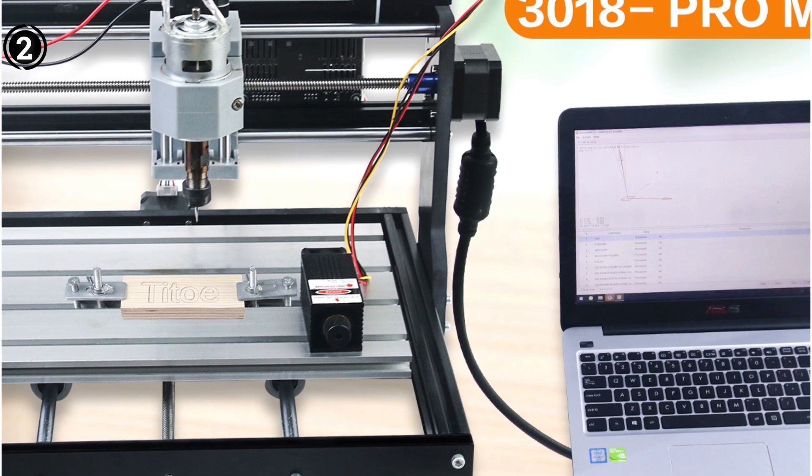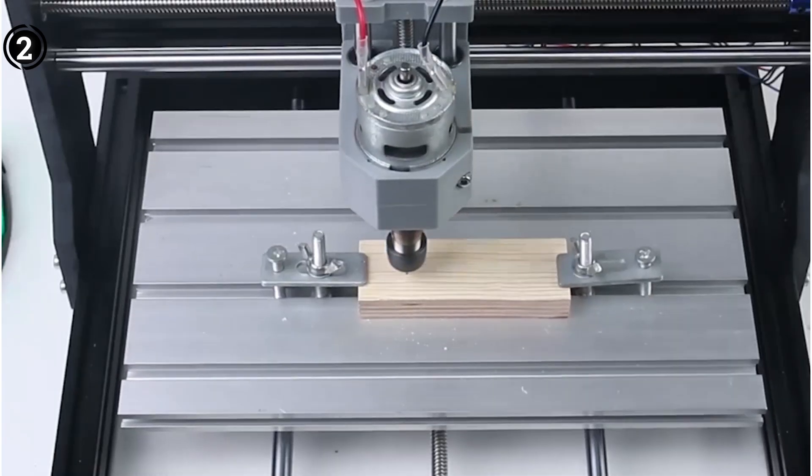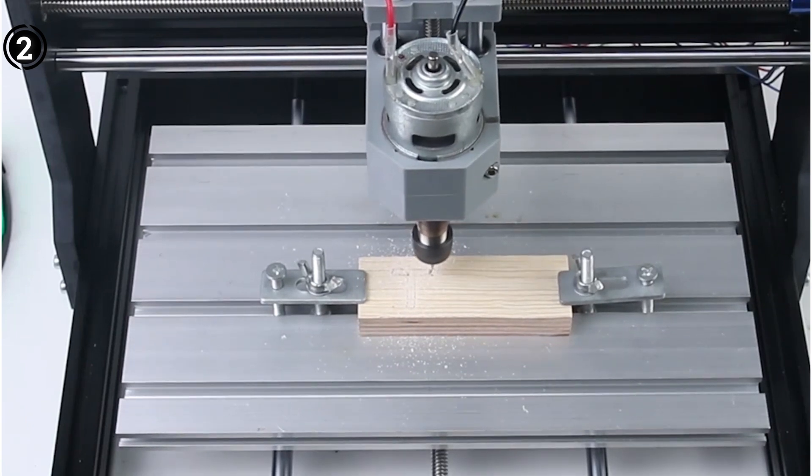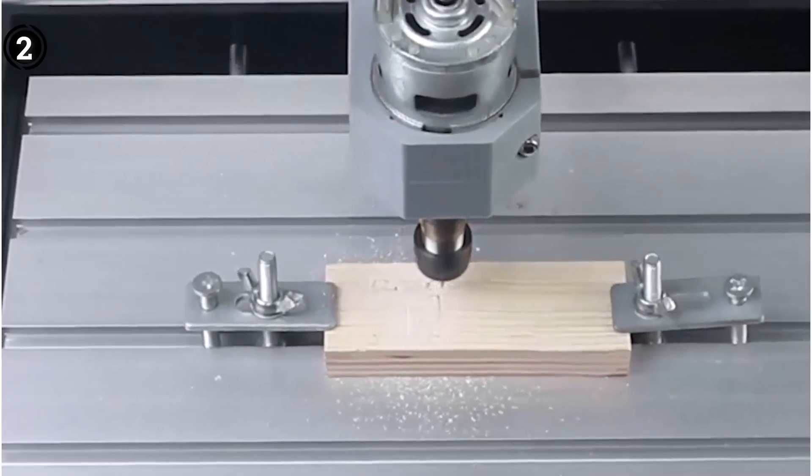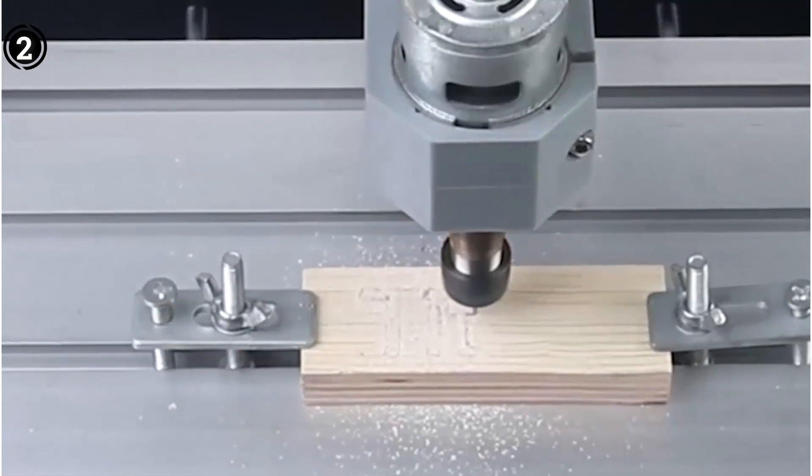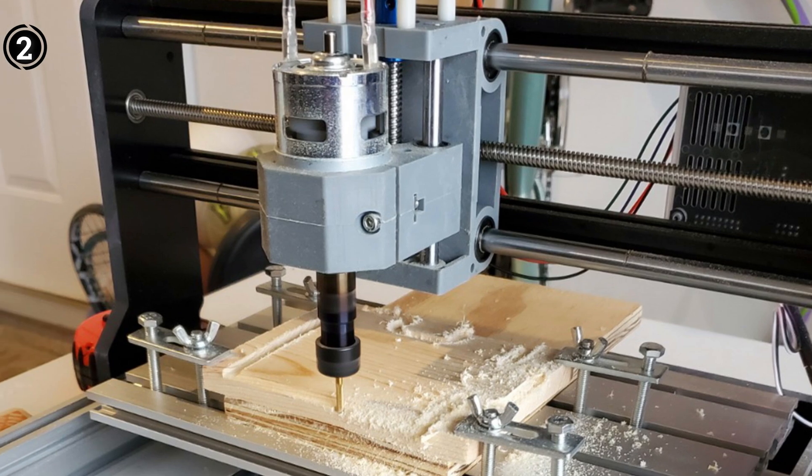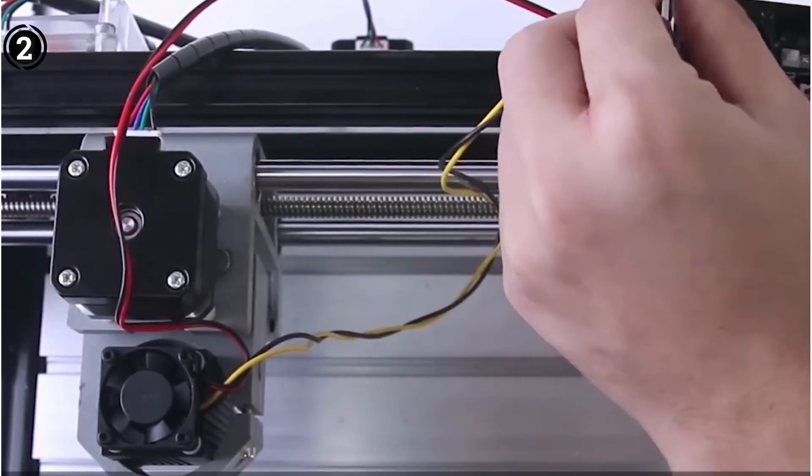The standout feature of this CNC machine is its 7000mW module, capable of precision carving and engraving on a diverse range of materials such as wood, craft paper, leather, wallets, bamboo, plastic, acrylic, MDF, PCB, and soft aluminum. It even excels at cutting through thin wooden boards and craft paper with ease.